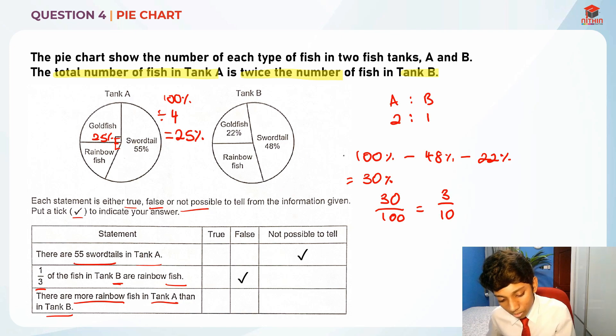The rainbow fish over here in tank A is actually only this amount over here. So what is the amount? It's basically 100 percent minus 25 minus 55 which will give us 20, so 20 percent. And the rainbow fish over here is actually 30 percent.